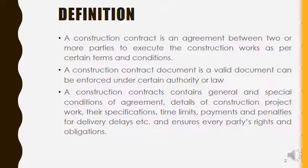Here is the definition: a construction contract is an agreement between two or more parties to execute construction work as per certain terms and conditions. Sometimes a third party may also be involved, like a subcontractor. The construction contract document is a valid document enforceable under certain authority or law. It contains general and special conditions of agreement, details of construction project work, specifications, time limits, payments, penalties for delivery delay, and ensures every party's rights and obligations.